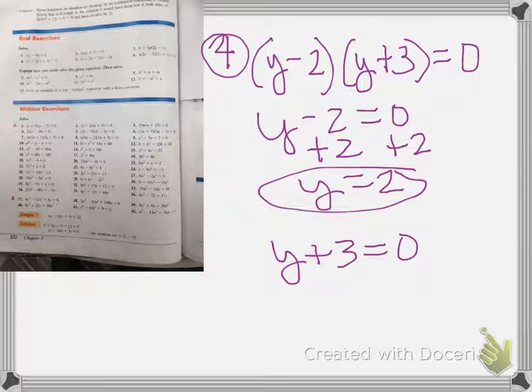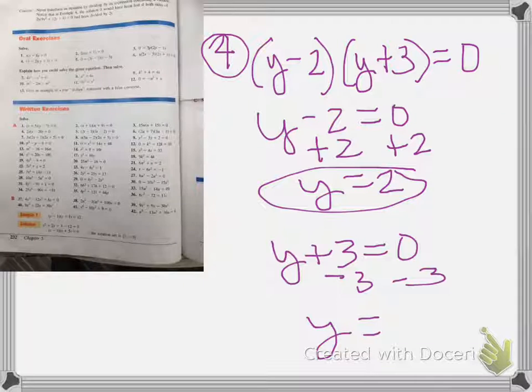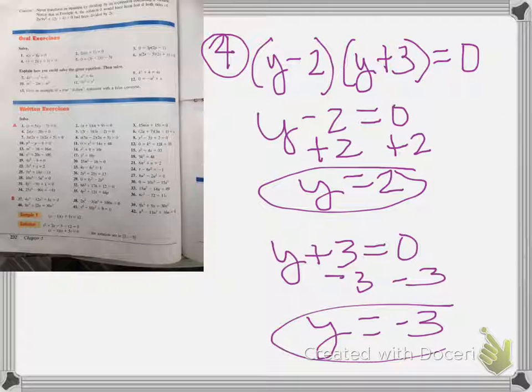On the next one, y plus 3, the opposite of adding 3 is subtracting 3, which leaves us with y equals negative 3. And our solution set is 2, negative 3.